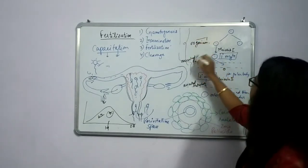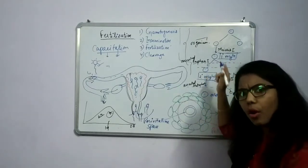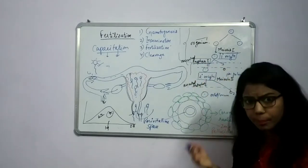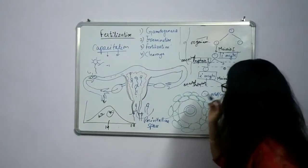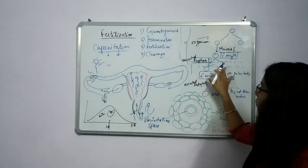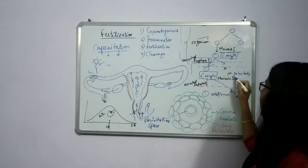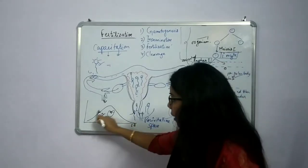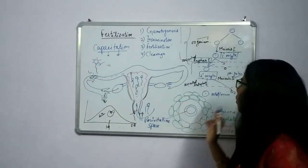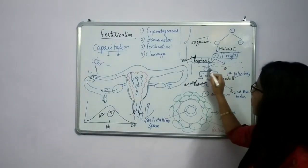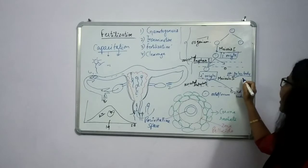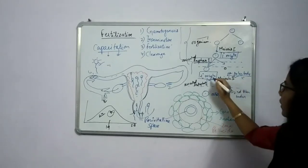From oogenesis, it first starts in the womb but remains in a suspended stage at prophase I. When the female attains the age of puberty, meiosis I completes and the secondary oocyte forms. Every month after puberty, a secondary oocyte forms along with a polar body, but the polar body degenerates. The secondary oocyte continues.